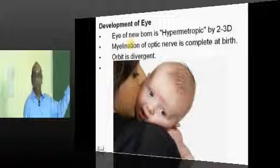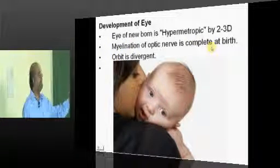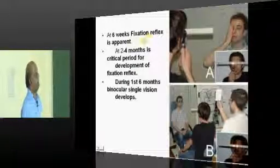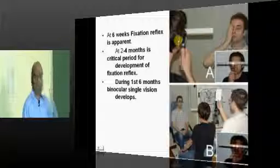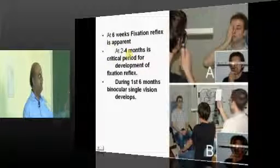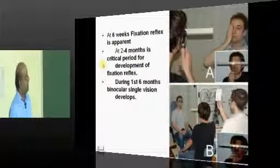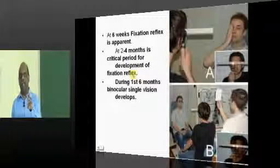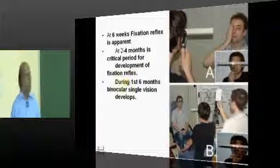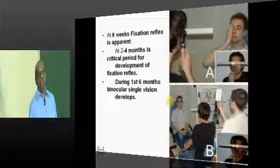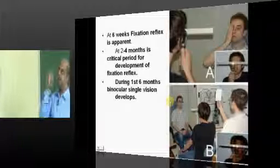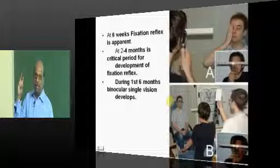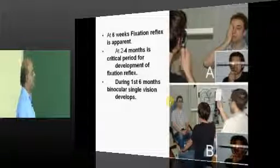The optic nerve myelination is complete at birth, and the orbit will typically be divergent at birth. It takes six weeks before the fixation reflex develops. The first two to four months of life is very critical for the development of the fixation reflex. That is the reason if any congenital strabismus is present, you need to aggressively correct it before the fixation reflex evolves.